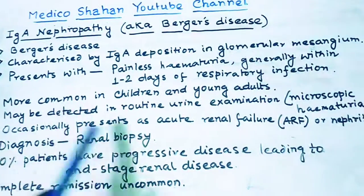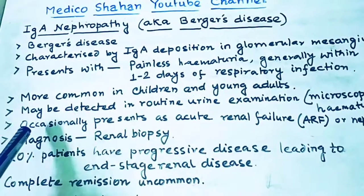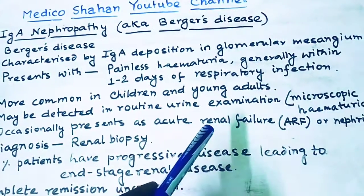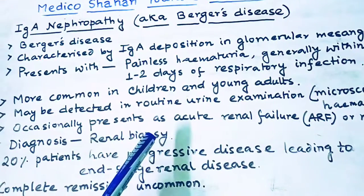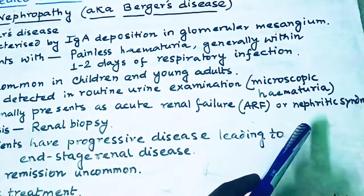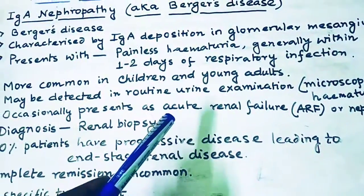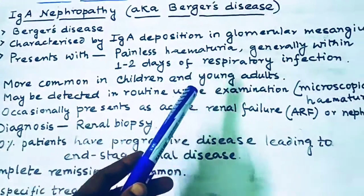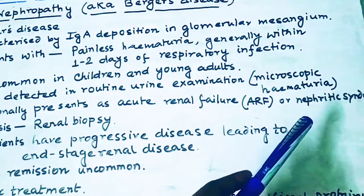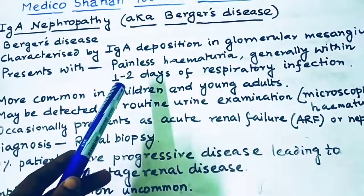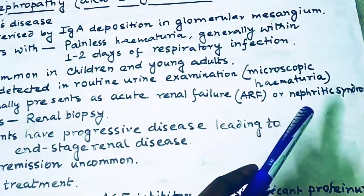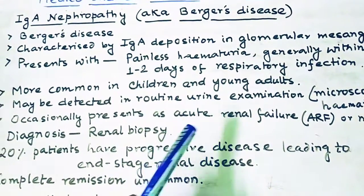It generally presents as microscopic hematuria. Occasionally it can present as acute renal failure, or it may present as nephritic syndrome — since nephritic syndrome is characterized by hematuria, this disease can manifest that way as well.